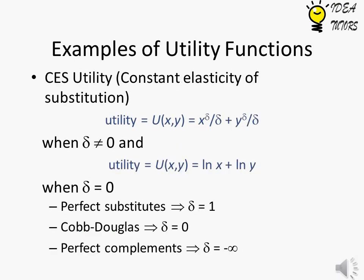CES Utility - Constant Elasticity of Substitution. For this type of utility, utility functions are given as follows: x to the power gamma divided by gamma, plus y to the power gamma divided by gamma when gamma is not equal to 0; log x plus log y when gamma is 0.